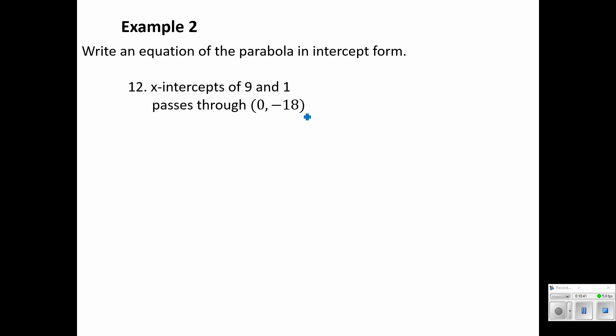Example two. Here we want to write the equation of the parabola in intercept form. Remember that's y equals a times (x minus p) times (x minus q), where p and q are the two zeros of that function, the two x-intercepts. So here we've got x-intercepts of nine and one, that's our p and q, and it passes through the point zero, negative 18. So just like before, we need to solve for a, and then we can go about writing our equation.